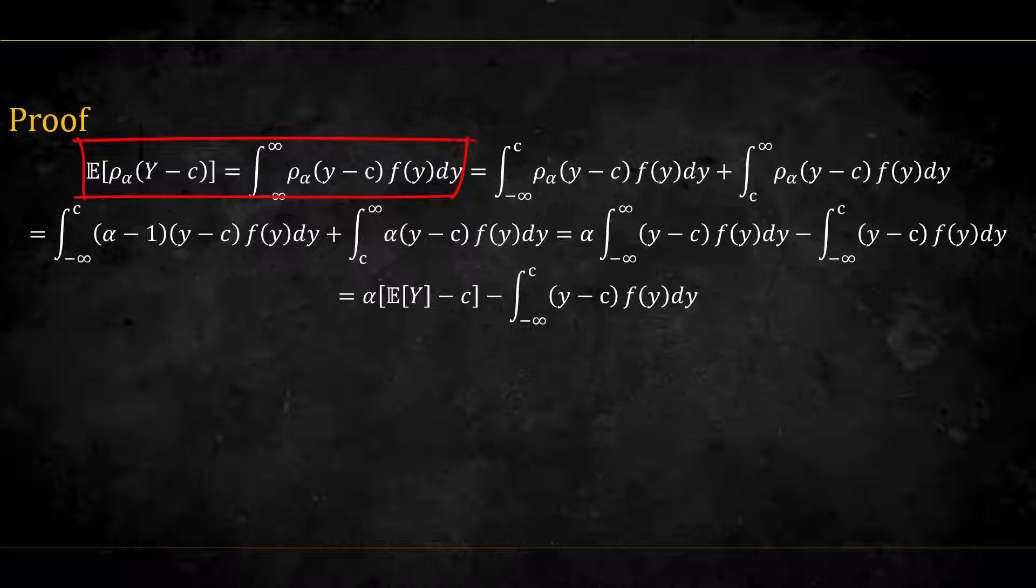We start by replacing the expected value with its definition for the continuous case, an integral of the value times the pdf. Then we separate this integral to two parts, up to c and from c onwards.